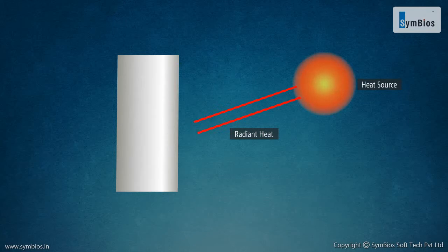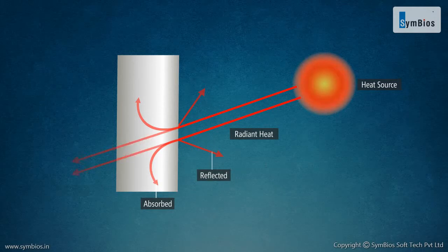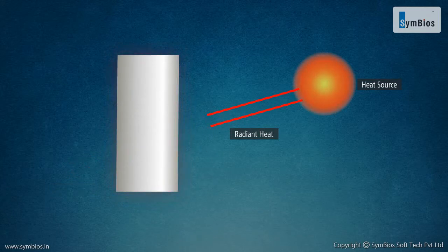when radiant heat reaches an object, it is partially absorbed, partially reflected, and partially transmitted. The temperature of an object increases due to the absorbed part of the radiant heat.